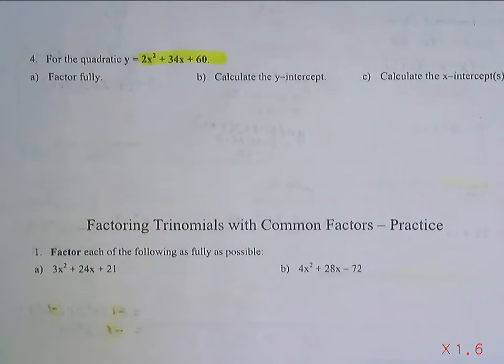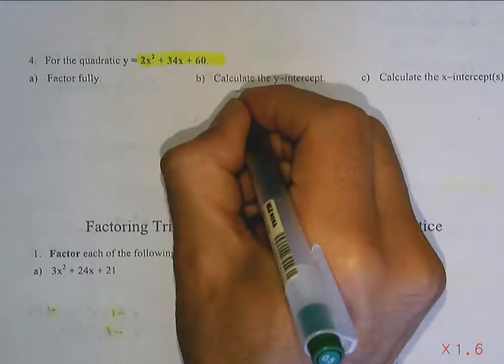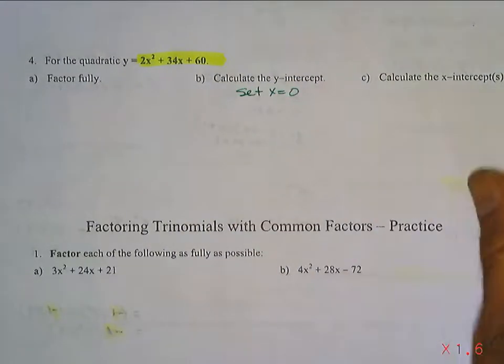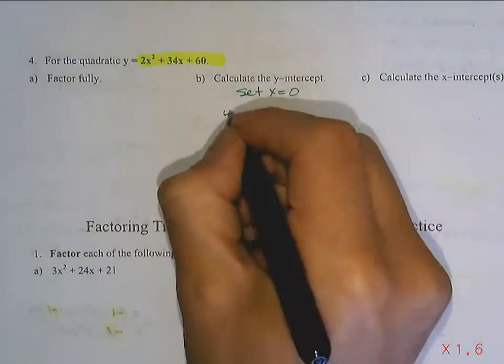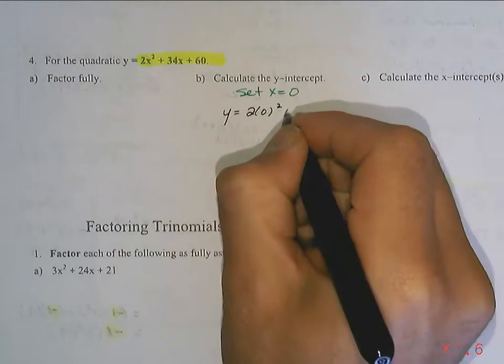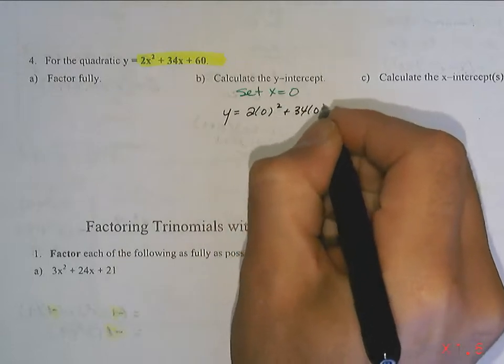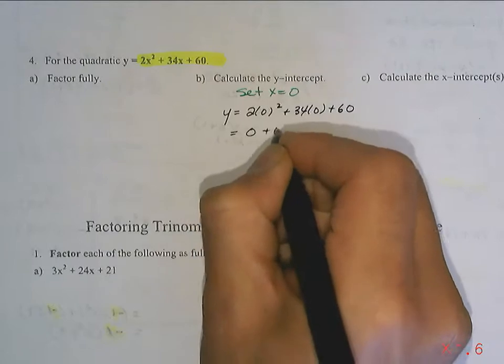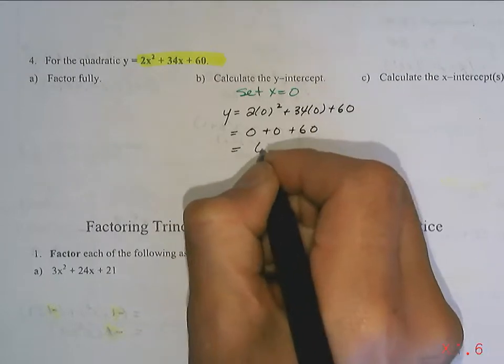Calculate the y-intercept. So, to calculate the y-intercept, you're going to set x equals 0. So, what that means is you're going to get y equals 2 times 0 squared, plus 34 times 0, plus 60, which is simply 0 plus 0 plus 60, which is 60.